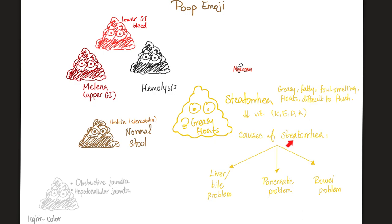Steatorrhea could be caused by a problem in your intestine, a problem in your pancreas, or a problem in your liver. Because in order for you to digest fat and grease, you need a good bowel, good pancreas, robust liver, and biliary system. So any disease in any of these can lead to fatty stool — steatorrhea. And you're not just losing fat; you're also losing fat-soluble vitamins such as vitamin K, vitamin E, vitamin D, and vitamin A.